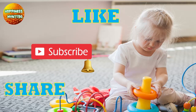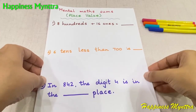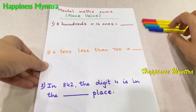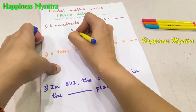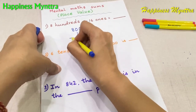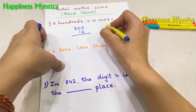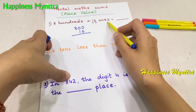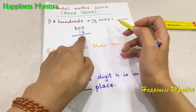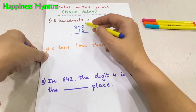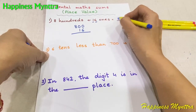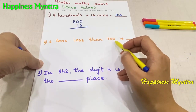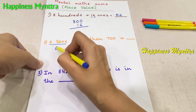The first question in this worksheet is: eight hundreds and sixteen ones. So we'll have eight hundred and sixteen. Usually this is written as one ten and six ones, but if we write 16 ones together, the child should know that it means 16 as a whole. So once this concept is clear, they know the answer is 816.